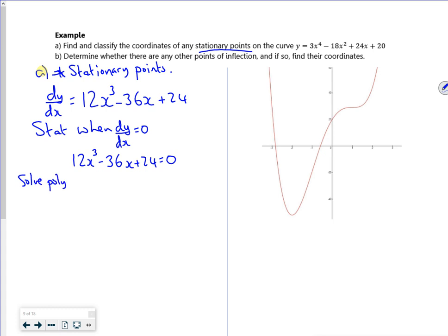If I solve this polynomial using my calculator - 12, 0, -36, 24 - it gives out two values: x = -2 or x = 1.